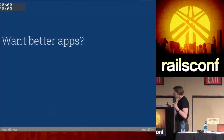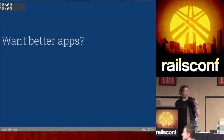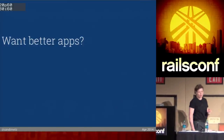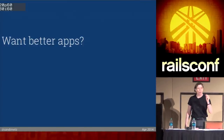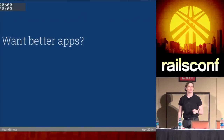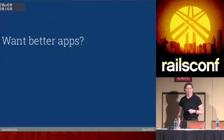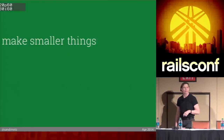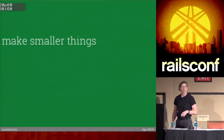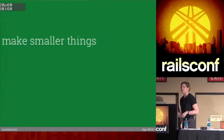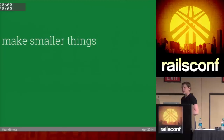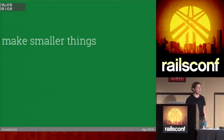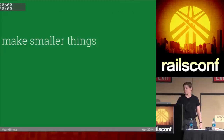When people ask me how to write object-oriented code, I tell them — I give them one small piece of advice. I say: make smaller things. That's all it is. Make smaller classes, make smaller methods, and let them know as little about each other as possible.